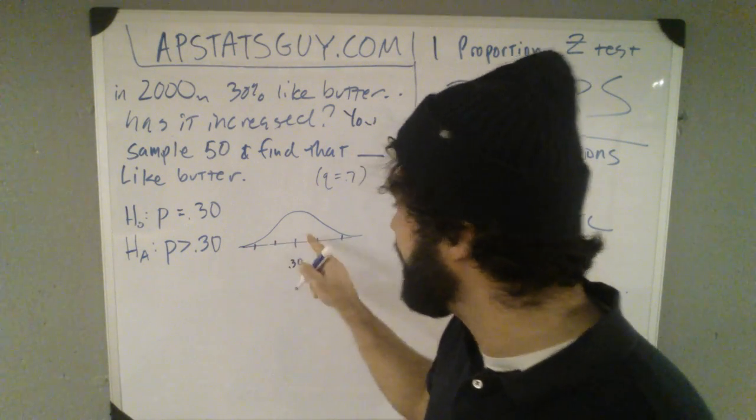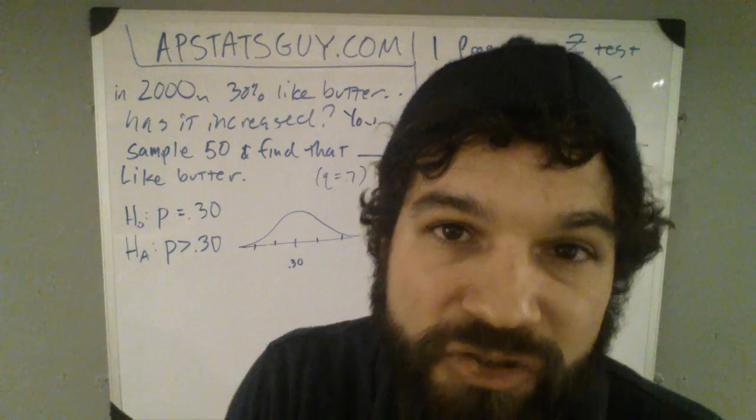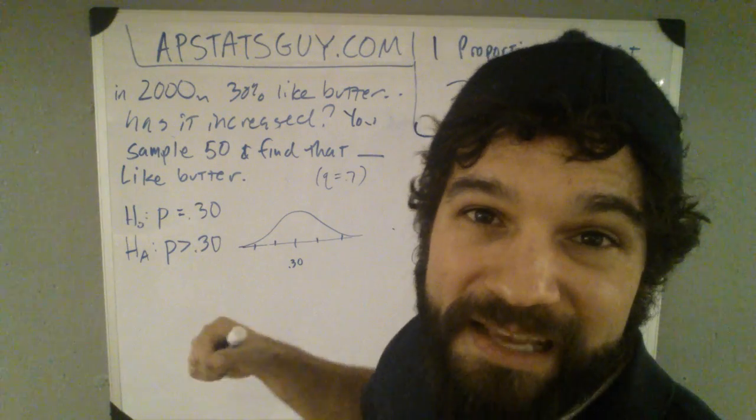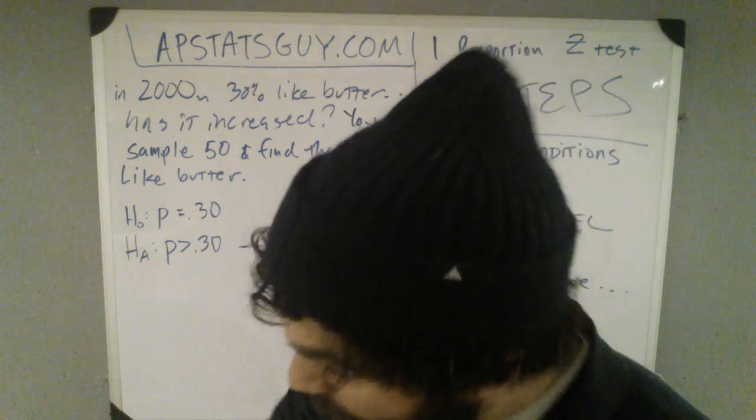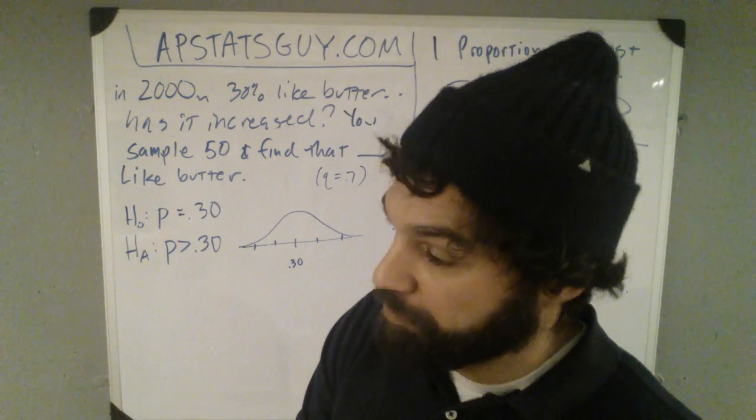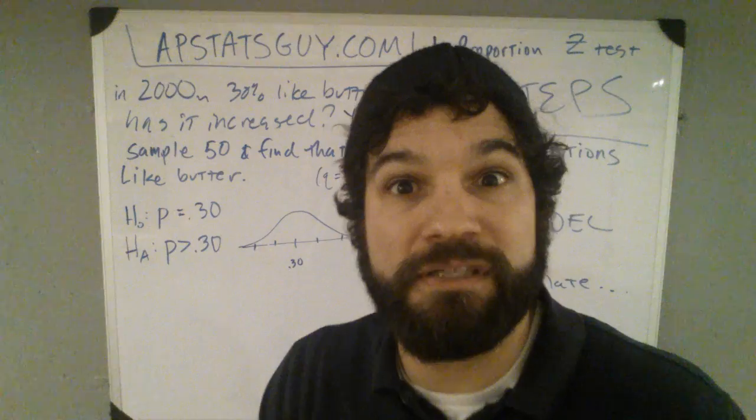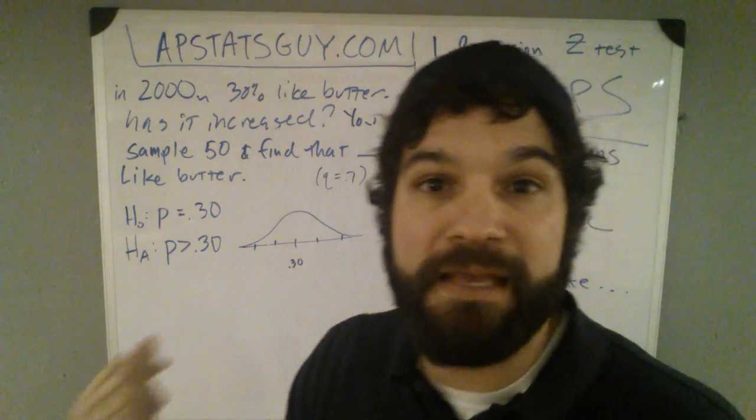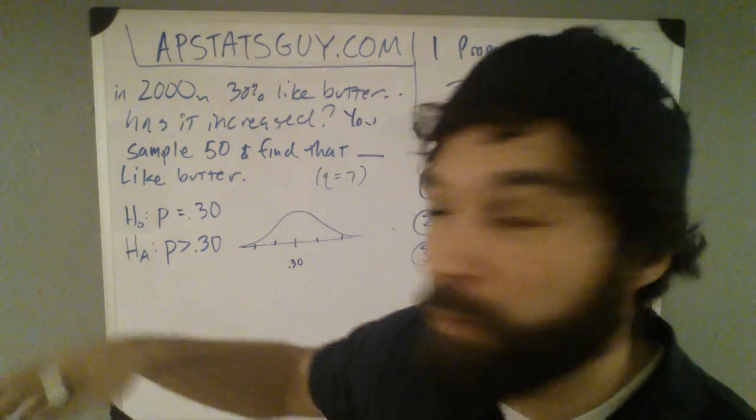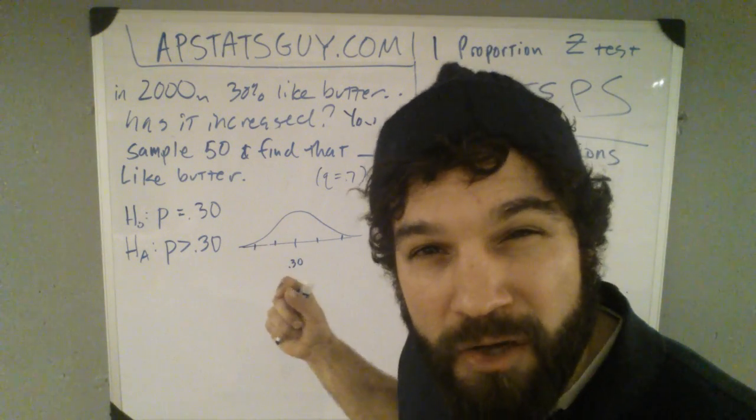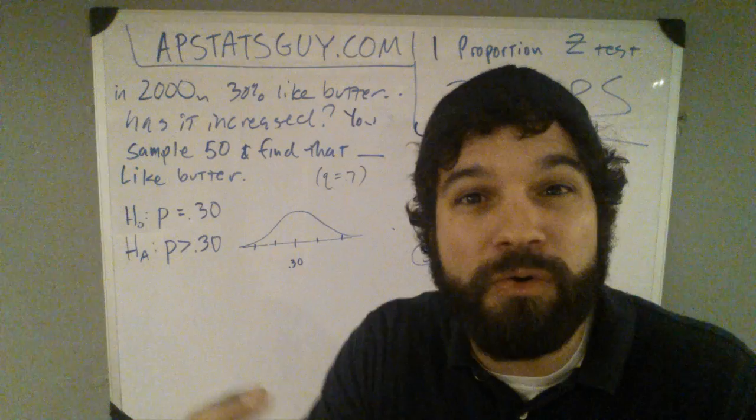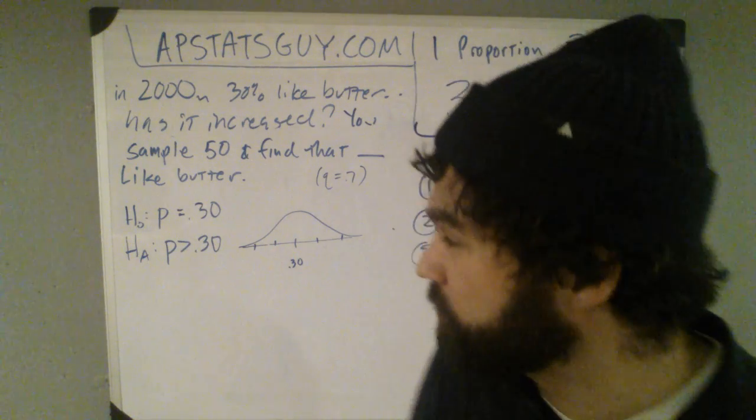So that's where all my p-hats, this is a sampling distribution. I'm imagining taking tons and tons of samples of size 50. Here's 50, oh, 30 people in this group like, okay, that's a p-hat of .6. Oh, 20 people, that's a p-hat of .4. I'm getting a whole bunch, imagining a bunch of p-hats, and I know what that looks like. How do I know what that looks like? Because we know sampling distributions for proportion look like this.